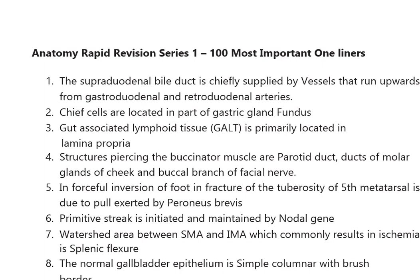The supra-duodenal bile duct is chiefly supplied by vessels that run upwards from the gastro-duodenal and retro-duodenal arteries. Chief cells are located in the fundus part of the gastric gland. Gut-associated lymphoid tissue (GALT) is primarily located in the lamina propria.